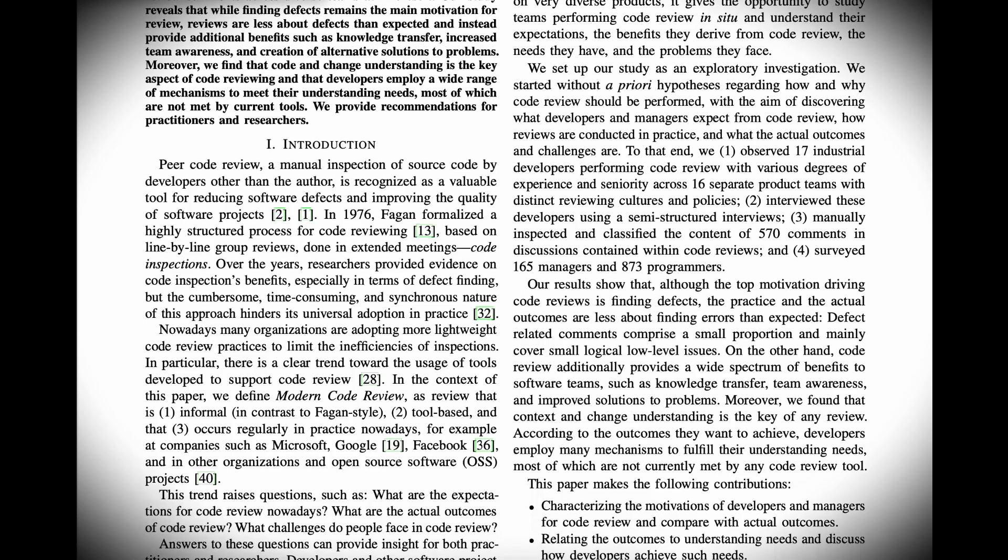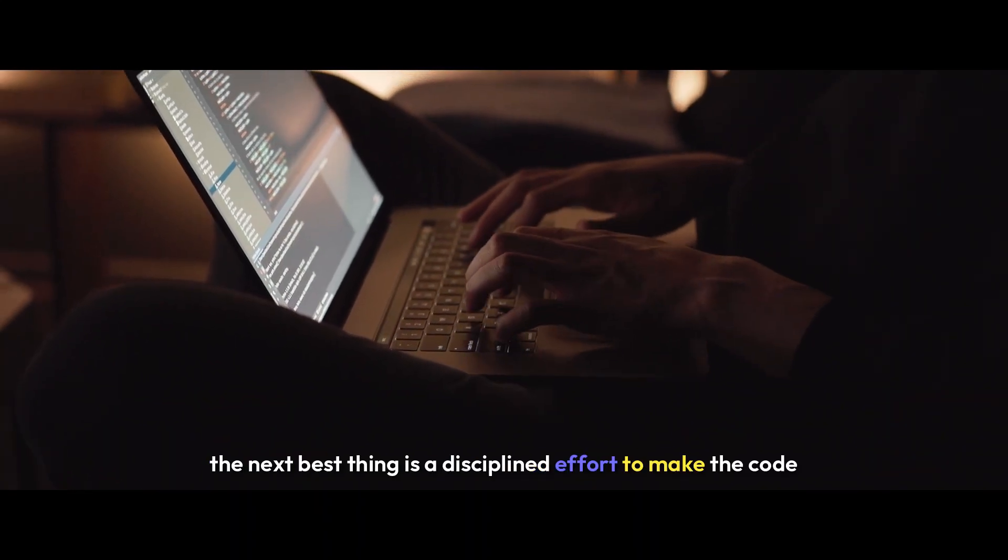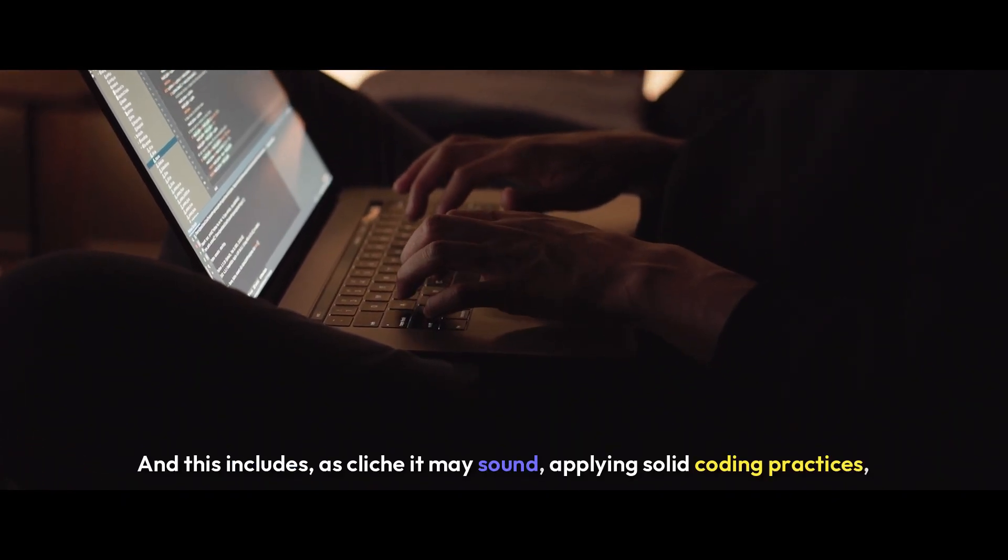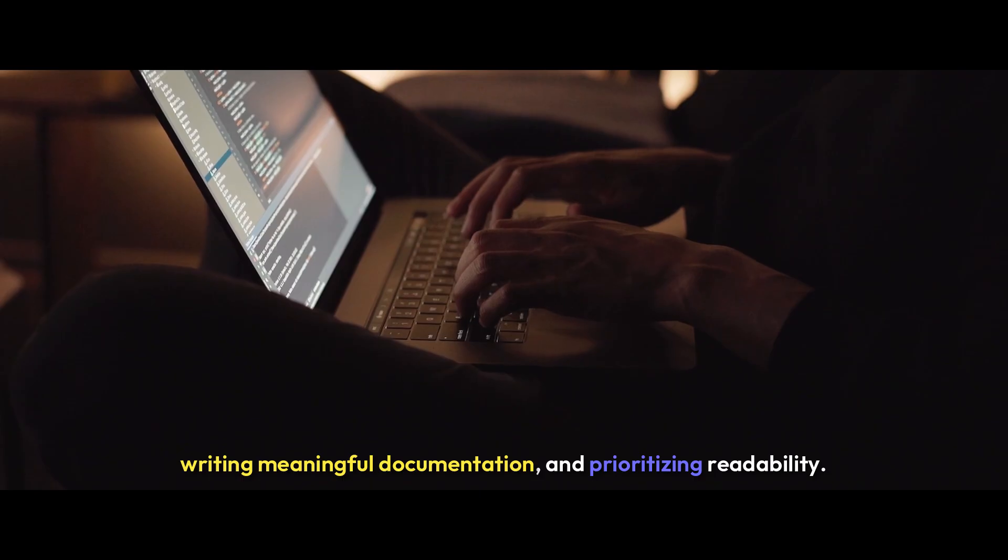In the absence of an ideal non-blocking review system, the next best thing is a disciplined effort to make the code as easy to understand as possible. And this includes, as cliche as it may sound, applying solid coding practices, writing meaningful documentation, and prioritizing readability.